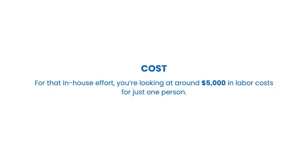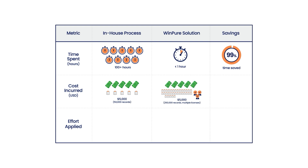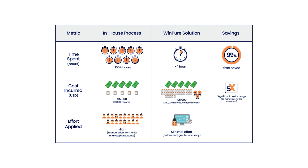Now let's talk costs. For that in-house effort, you're looking at around $5,000 in labor costs just for one person. But with WinPure, that same $5,000 gets you multiple licenses and the ability to clean and match over 250,000 records — five times the value for the same cost. Manual processes demand repetitive effort from analysts or consultants, leaving room for errors. WinPure automates this process, ensuring greater accuracy with minimal effort so your team can focus on high-value work instead of tedious tasks.